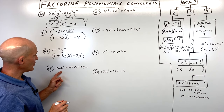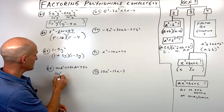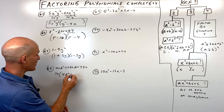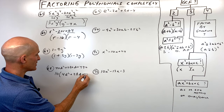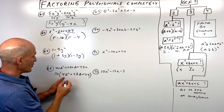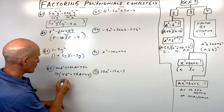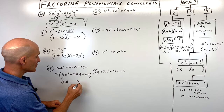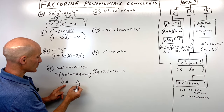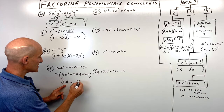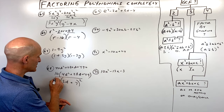Number sixty-eight: all terms end in 0, so we can factor out 10. That gives 10 times 4d squared plus 28d plus 49. Check for a perfect square trinomial: 2d times 7 is 14d, doubled is 28d — it matches. So this is 10 times 2d plus 7 quantity squared. Bring down the greatest common factor.